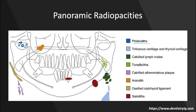Let's go over these briefly. We have the phlebolith — this is a calcified blood clot, and it's usually in the pterygoid plexus. This is located by the sigmoid notch, or by the pterygomaxillary fissure.